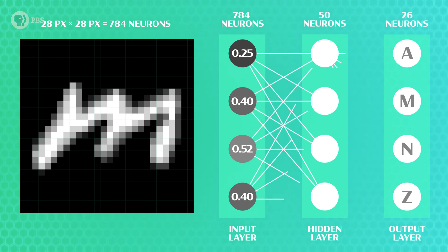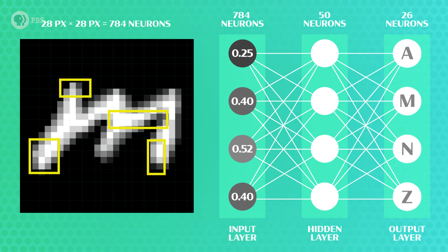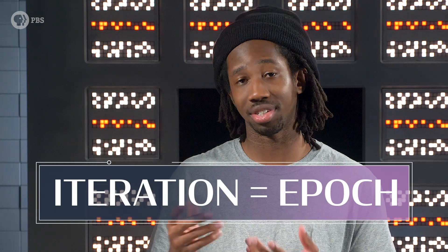Over the span of one epoch of training this neural network, each of the 60,000 images in the training dataset will be processed by the input neurons. The hidden layer neurons will randomly pick some aspect of each image to focus on. And the output neurons will hold the best guess as to whether each image is a particular letter. You'll see that the code in our collab notebook calls this an iteration. In the specific algorithm we're using, an iteration and an epoch are the same thing.